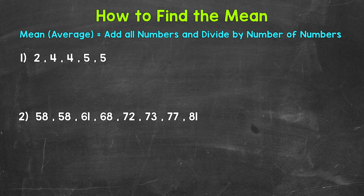Starting with number 1 where we have a data set with 5 numbers. To find the mean, we need to add all of the numbers in the data set, and then divide by the number of numbers. So let's set this up.